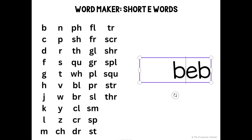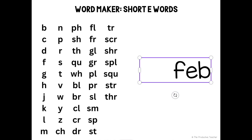Beb — beb is not a word. Seb — seb is not a word. Remember, the letter C makes the S sound before E. Deb — deb might be a name, so I can capitalize it and make it a word. Feb — feb is not a word. Jeb — jeb is not a word. Remember, G makes the J sound before E.